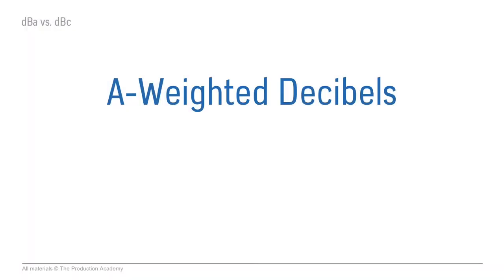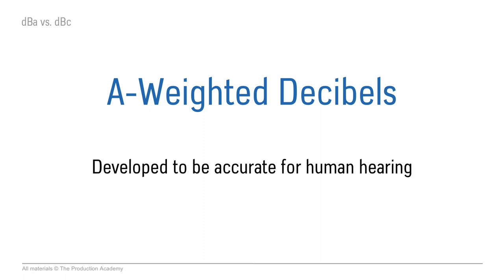So let's first talk about A-weighted decibels. When these were developed, they were developed to be really accurate for human hearing at a low volume. Of course, in live music, we're rarely at really low volume levels — quite often we're at loud volume levels.